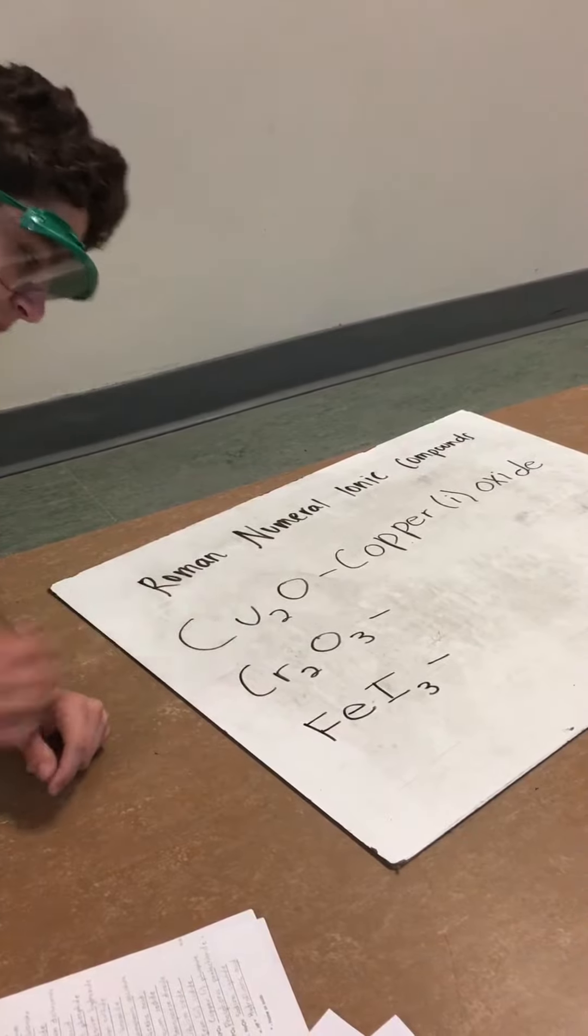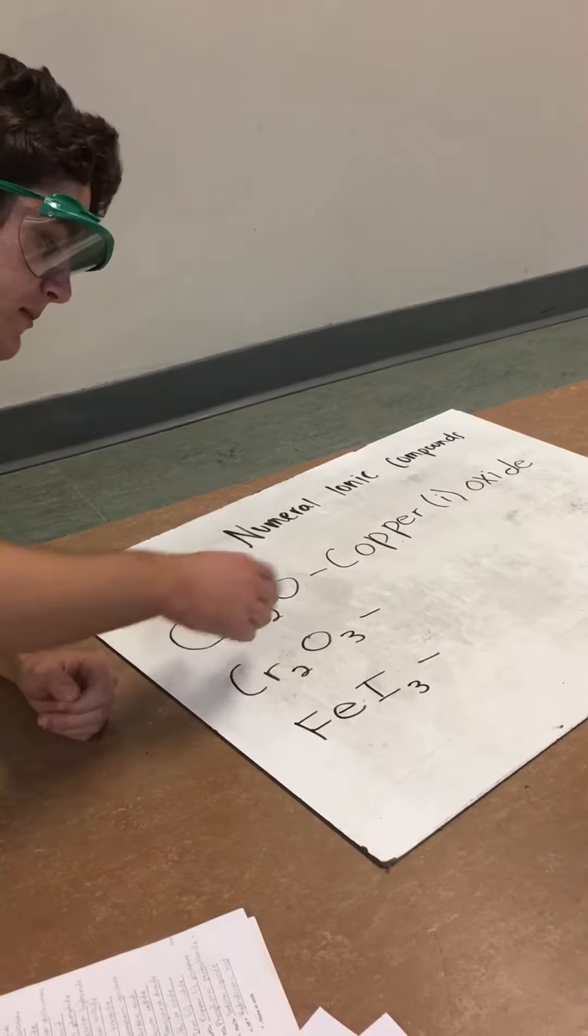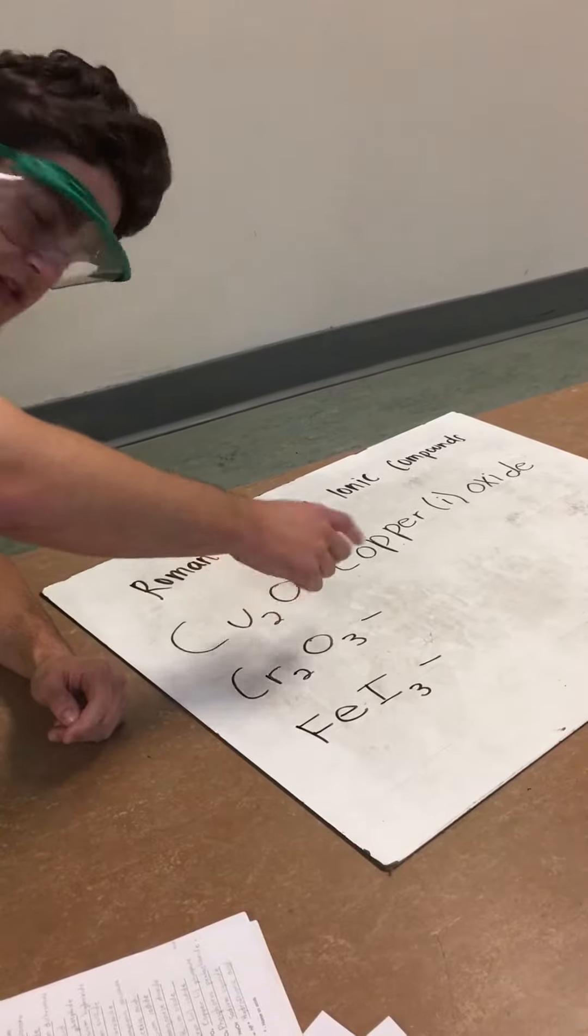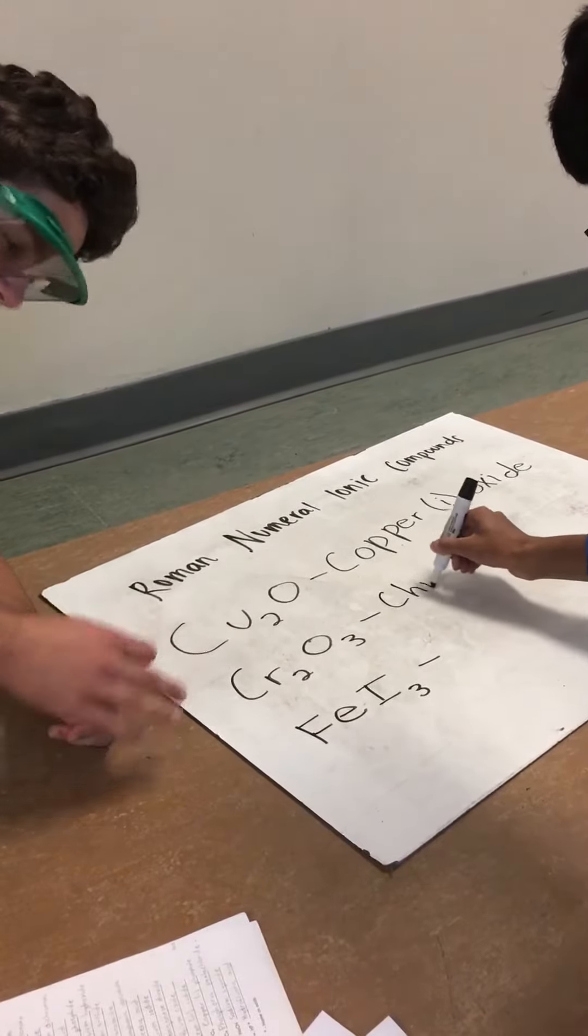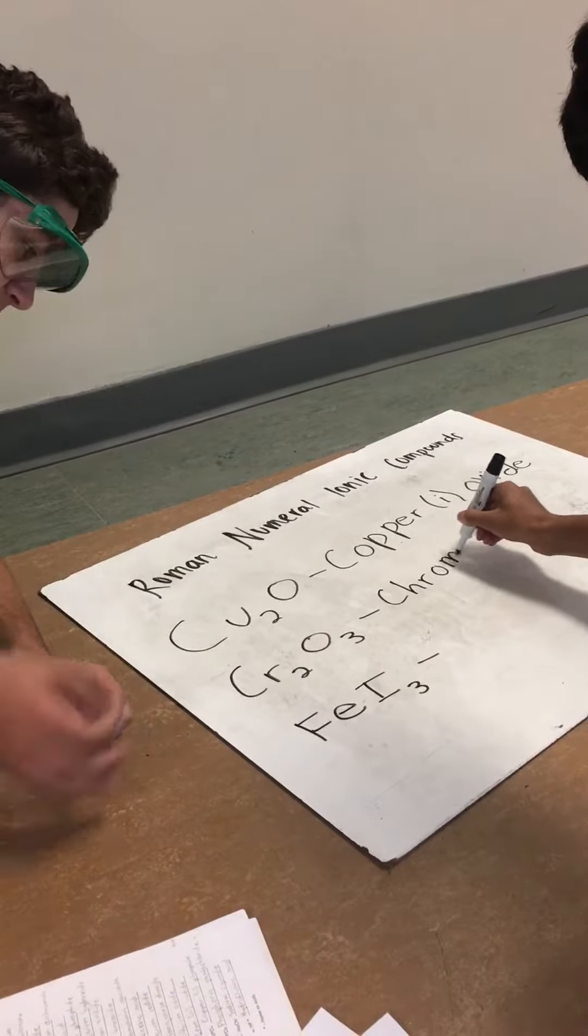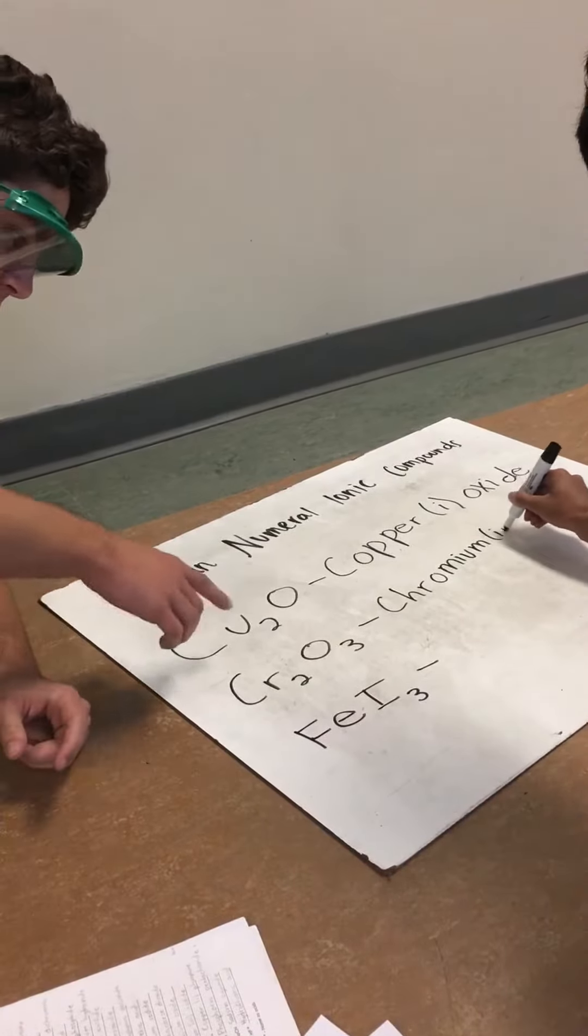And for here, we have chromium oxide. Chromium would have to have a charge of positive 3, because oxygen, since it has a negative 2 charge and there's 3 molecules, would have a negative 6 overall charge. Therefore, plus 3 times 2 would have to equal positive 6 to cancel out.